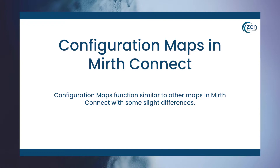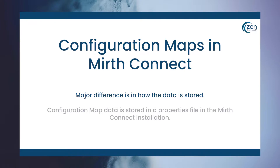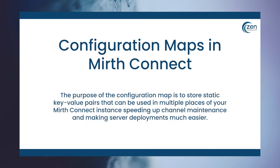The configuration map functions similar to other maps you may have worked with in MirthConnect, but with some slight differences. The major difference in the way configuration maps work is in how the data is stored. All other maps are stored in memory, while the configuration map's contents are stored in a properties file in the MirthConnect installation. This will be important to note in the event that you have to do some maintenance on the Mirth installation itself. The purpose of the configuration map is to store relatively static key-value pairs that can be used in multiple places of your MirthConnect instance.